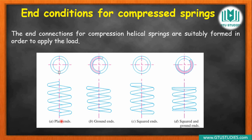There are four types of end conditions. The first is plain end condition — like a regular spring where the upper and lower ends are not ground. This is called plain end. Then there is ground end condition where the ends are ground. Open end condition is where the spring end is open and not ground.